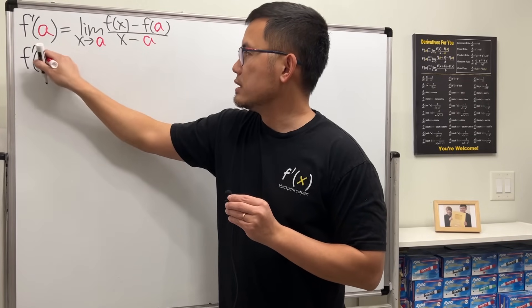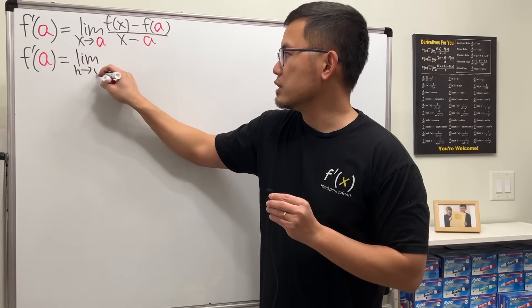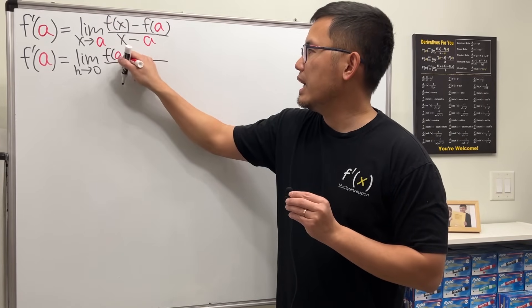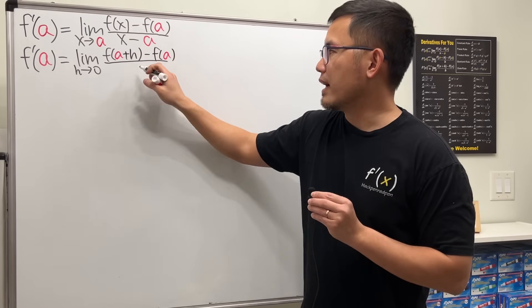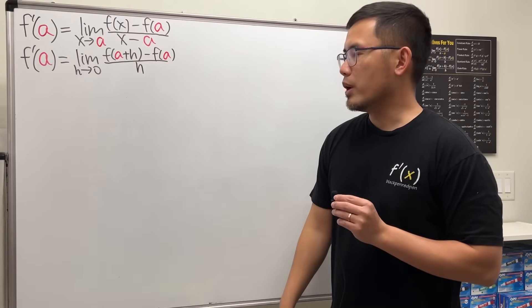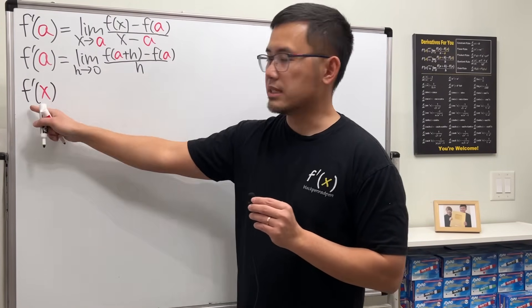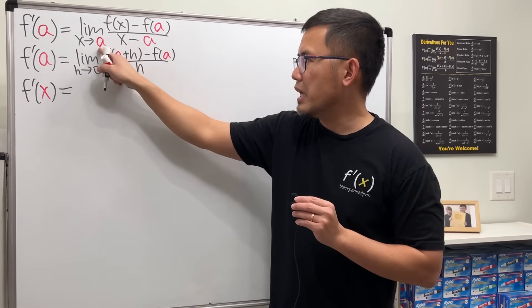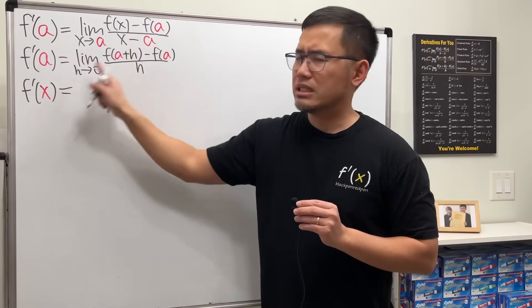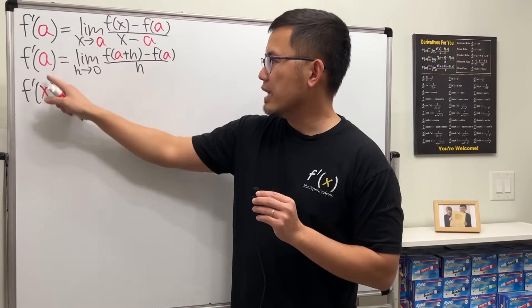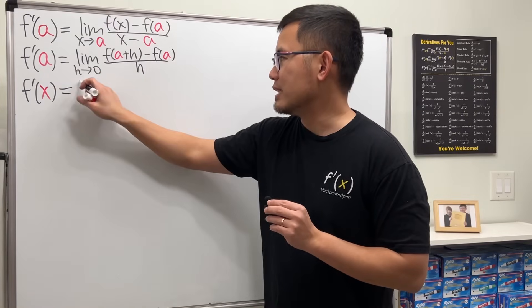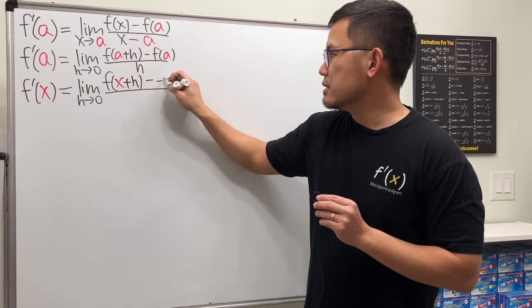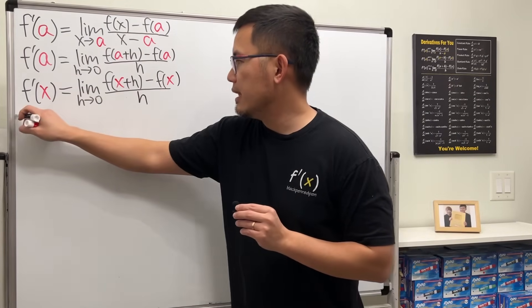The second version uses h: f prime of a equals the limit as h approaches zero. Here, h is the distance between the two points, so we have f(a+h) minus f(a), all divided by h. The reason we need a second version is for the derivative as a function. If we write f prime of x and substitute x for a in the first formula, we get x minus x in the denominator — that's zero, which is no good. So we use the h-version: the limit as h approaches zero of f(x+h) minus f(x), all over h.